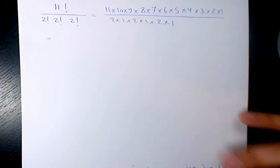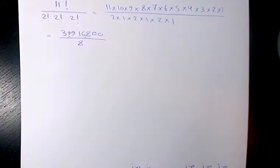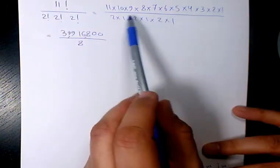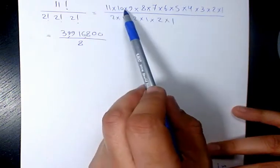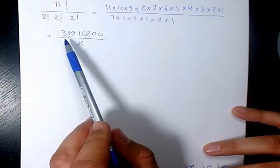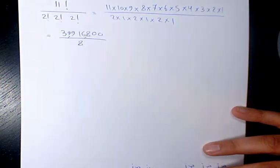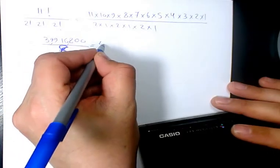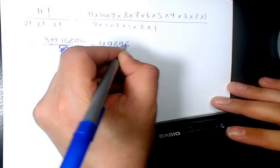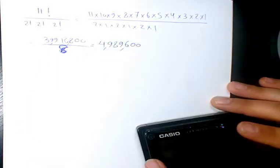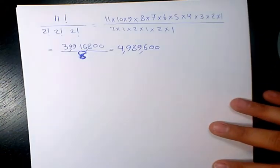Now I need to use my calculator to solve it. When you use your calculator and you multiply eleven times ten times nine all the way to one, it's going to be 39 million, 916,800, divided by 8, which is 4,989,600.